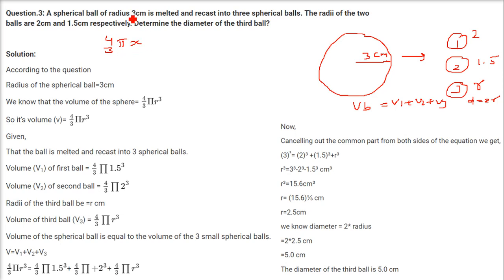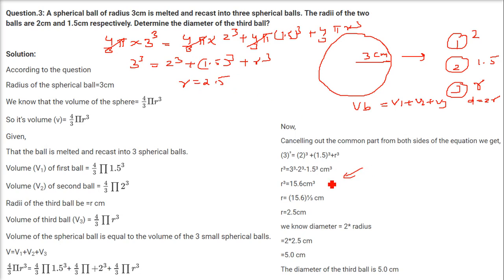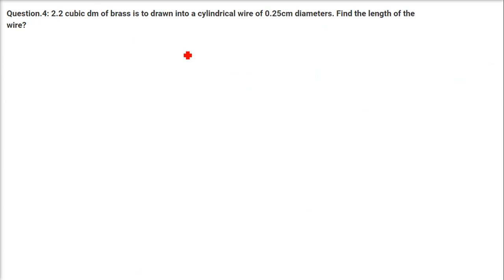So (4/3)π × 3³ = (4/3)π × 2³ + (4/3)π × 1.5³ + (4/3)π × r³. Cancel 4/3 π throughout: 3³ = 2³ + 1.5³ + r³. Solve for r³ and r comes out as 2.5. But the question asks for diameter, not radius. So diameter d = 2r = 2 × 2.5 = 5.0 cm.